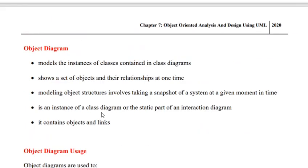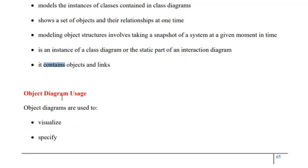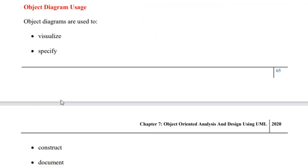In this class, we have learned what an object diagram is — a diagram capable of modeling the instances of classes participating in the class diagram. It shows the set of objects and their relationships at a given point in time. It is a simple diagram capable of representing objects and the links between them. Object diagram is used for visualizing, specifying, constructing, and documenting the instances of classes participating in realization of the system along with their relationship.